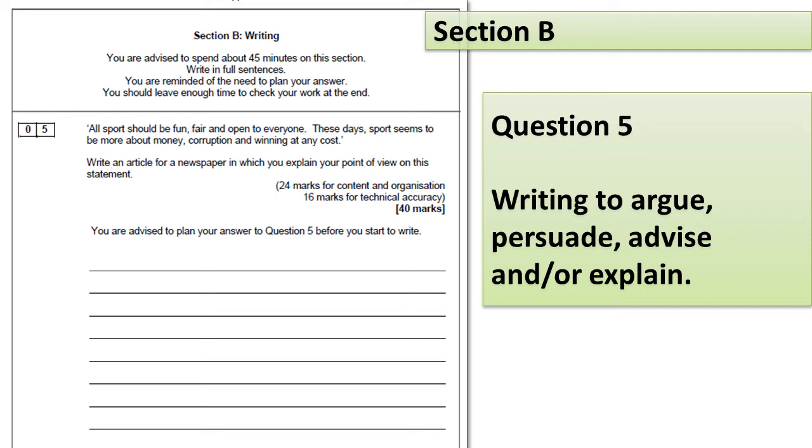You'll be asked to write in a certain form, so it could be an article, a letter, a speech, a leaflet, or an essay, and you'll be asked to either explain a point of view, argue, persuade, or advise on a certain topic. As with paper 1, you've got 24 marks for your content and organization and 16 marks for your technical accuracy, so you're looking at 40 marks in total. This is an extended response so you should plan before you begin. The exam board have noted that you don't have to respond to every single part of the statement. In fact, it's a good idea to choose one key part of the statement to form a really clear line of argument and you develop that through your extended response. Make sure you leave some time to proofread at the end because you never know where you might pick up some marks for technical accuracy, perhaps if you've managed to edit something that you spotted was incorrect.